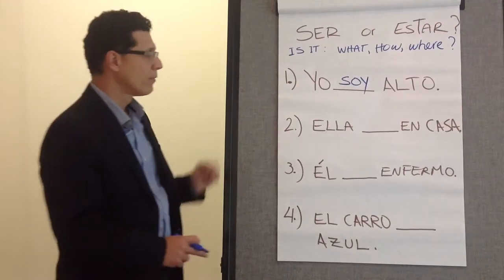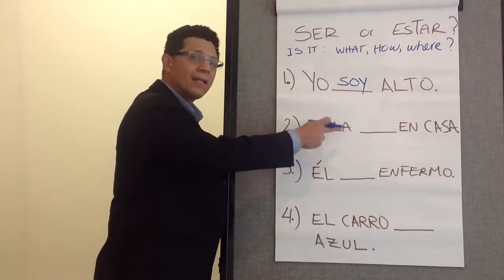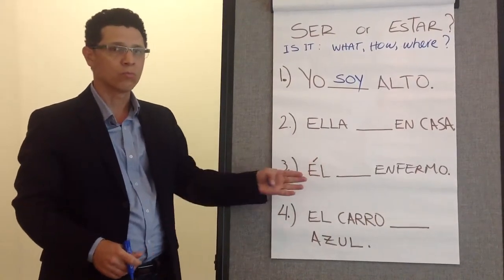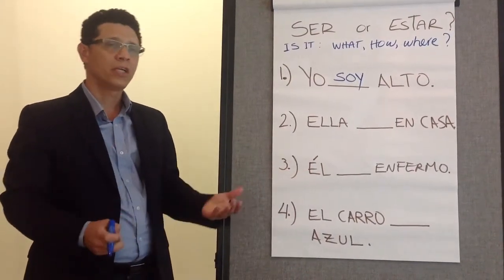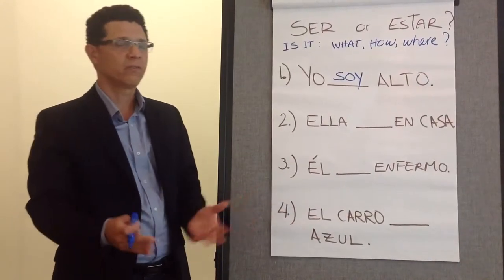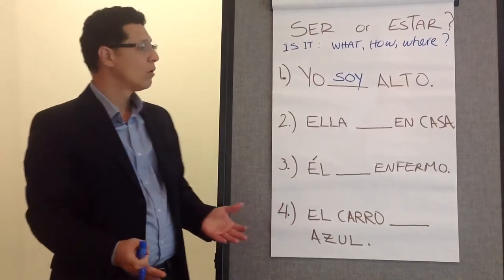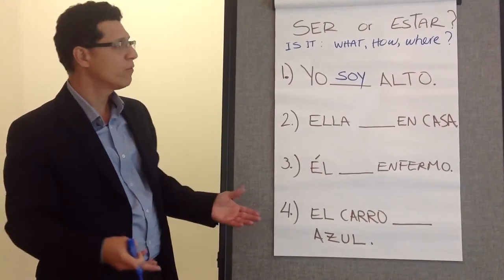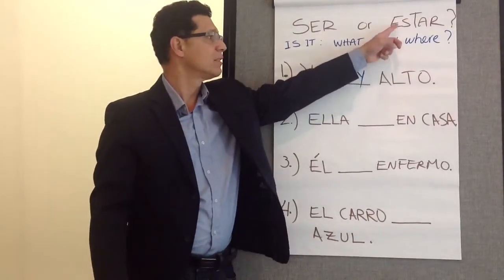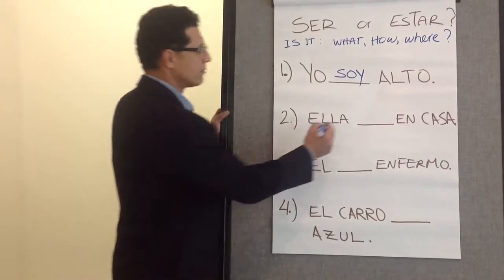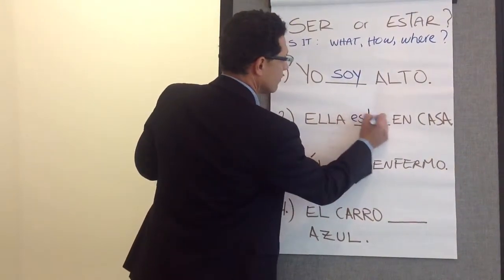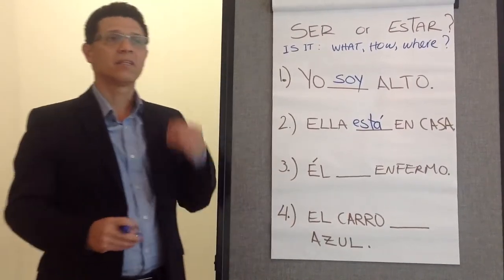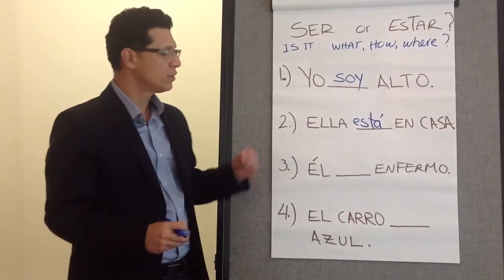Example number two: 'Ella __ en casa' — she is at home. Is it what she is? Is it how she is — she feels like home? Or is it where she is? Obviously, it's where she is. Therefore, we use estar. Ella está en casa. Why? Because it's the location where she is.